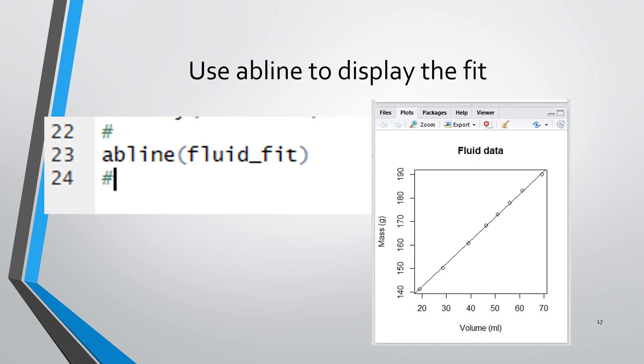For a straight line, the fit line is easily added to the plot using the abline method. It has a single argument and that argument is the result of the linear model.